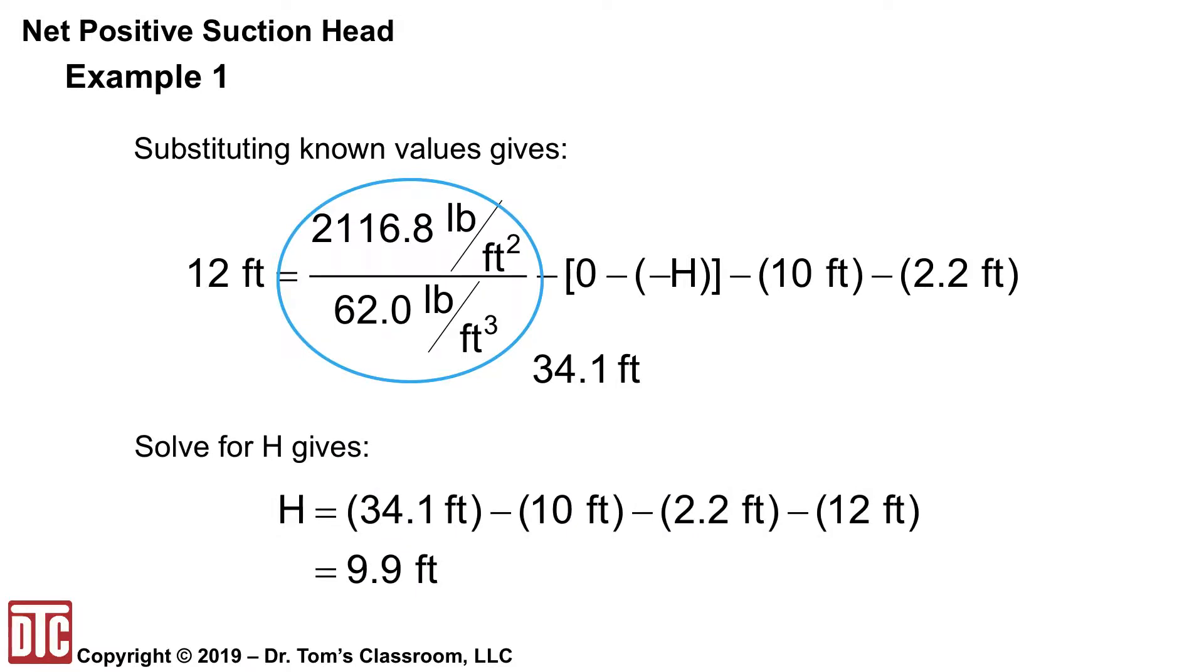So if we solve for H, what we end up with is the P atmosphere number 34.1 atmospheric pressure head minus the 10 minus the 2.2 minus the 12 to give us 9.9 feet is the maximum height below the suction side that that surface of the reservoir can be. And you can see what happens there. The atmospheric is really what's driving it, but you lose with the friction factor, friction that's in it. And you lose the vapor pressure part, and then the required that you've got to have there is 9.9.